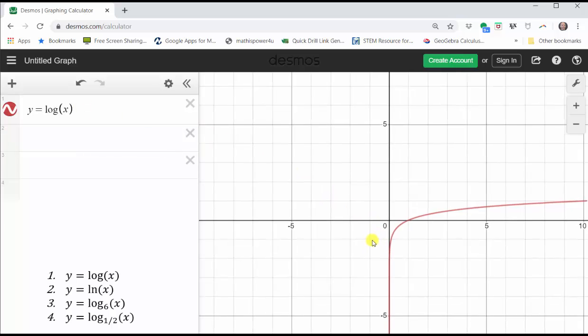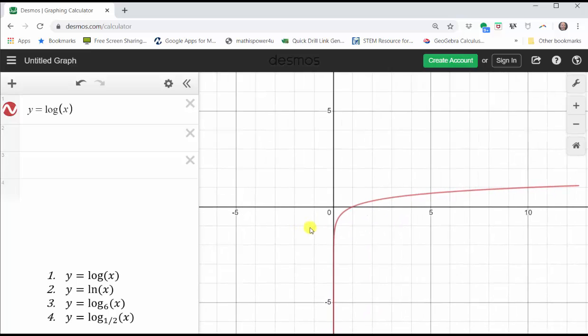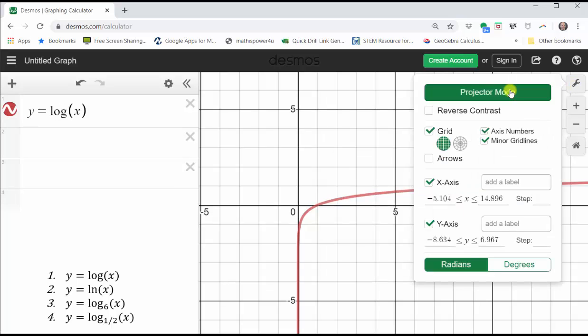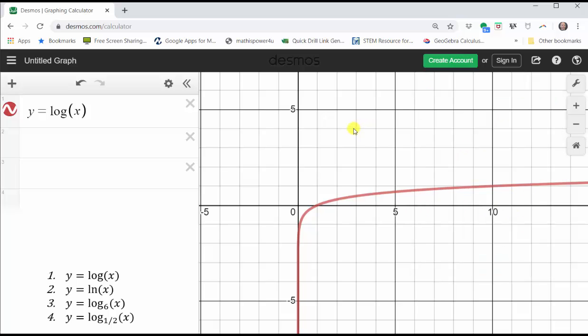If we want to, we can click, hold, and drag to reposition the coordinate plane to get a better view. We can also click on the wrench in the upper right-hand corner. If we click projector mode, the thickness of the graph changes. We can also adjust the axes manually here. Let's click out of this window.